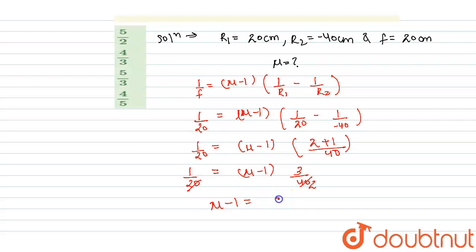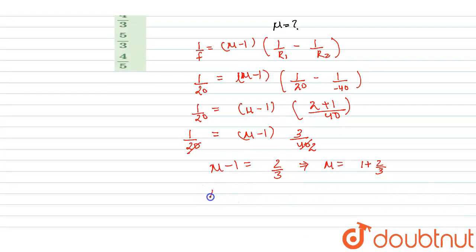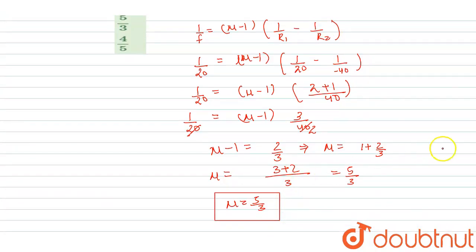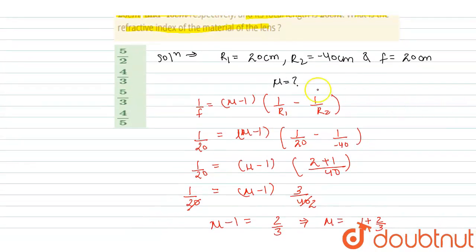So 3/40 and 1/20 simplify: μ − 1 = (1/20) × (40/3) = 2/3. Therefore μ = 1 + 2/3 = 5/3. So mu is equal to 5/3, and this is our answer. In the options, option C, which is 5/3, is the correct option.